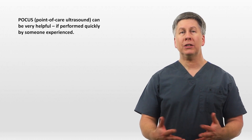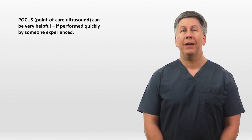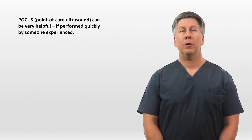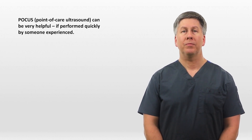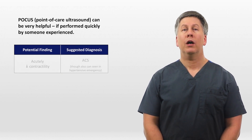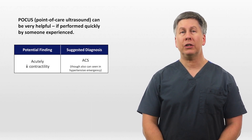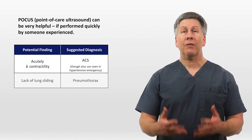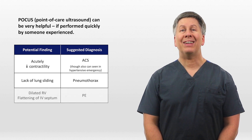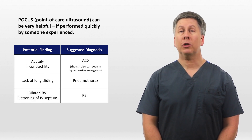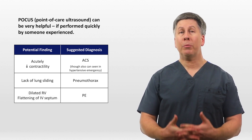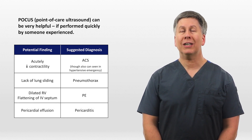From the focused history and a few minutes of exam, you should be able to narrow down the differential, and it's time for diagnostics. POCUS, or point-of-care ultrasound, can be very helpful in acute chest pain, but only if performed quickly by someone experienced. Potential findings include acutely decreased contractility suggesting ACS, lack of lung sliding suggesting pneumothorax, a dilated right ventricle with flattening of the interventricular septum suggesting pulmonary embolism, and a pericardial effusion suggesting pericarditis.